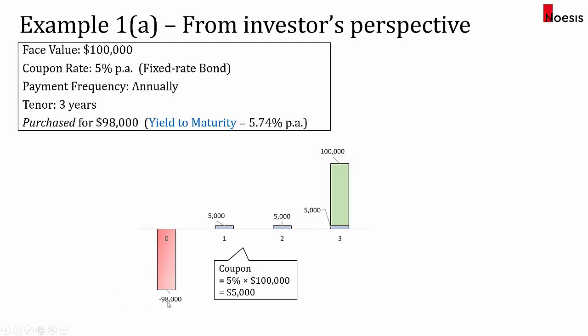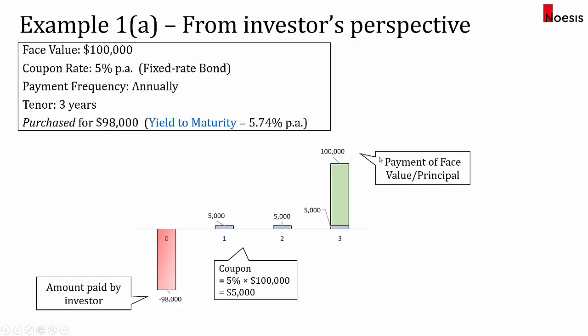The $98,000, shown as a negative sign, is the amount paid by the investor — that's a cash outflow. The $100,000 here is a payment of the face value, also called par value or principal. From the investor's perspective, this bond is an asset. It is a form of investment where there is a cash outflow at the beginning, and then cash inflows — the returns — after that.